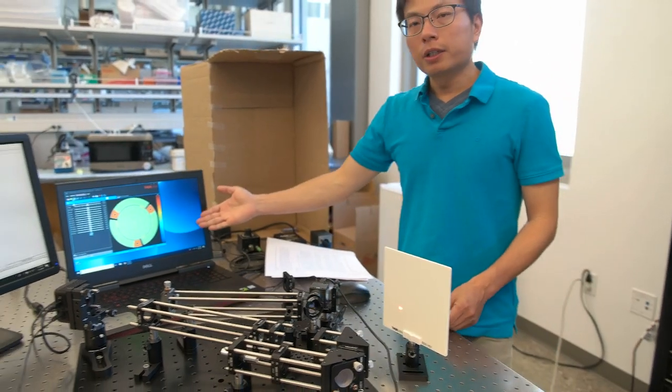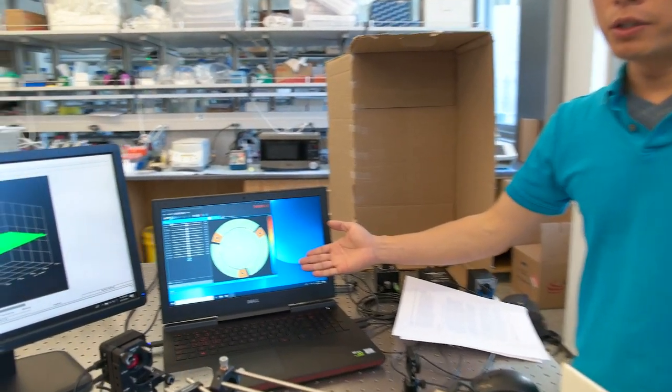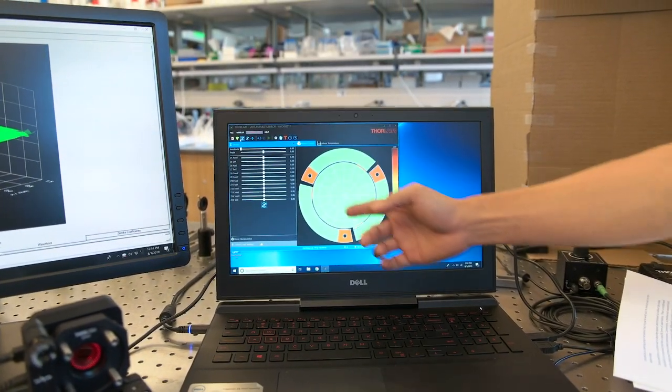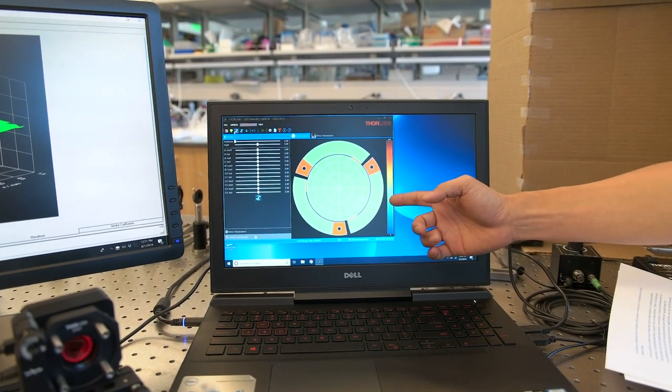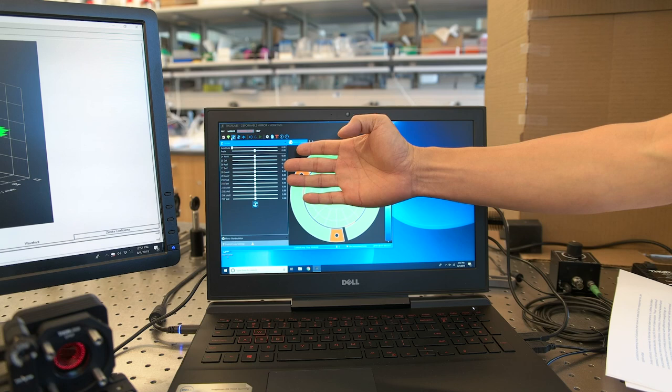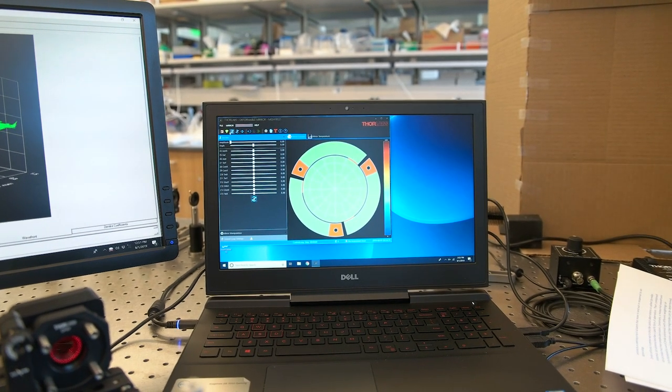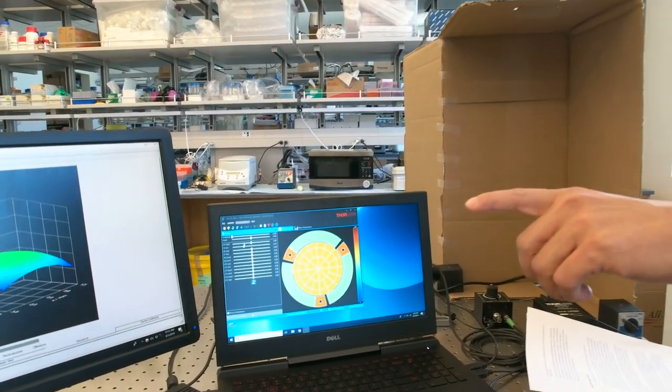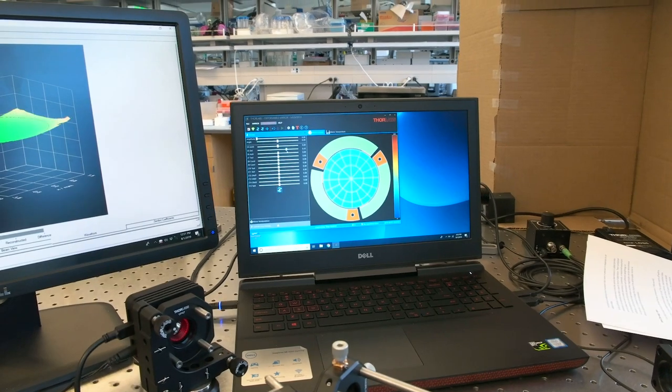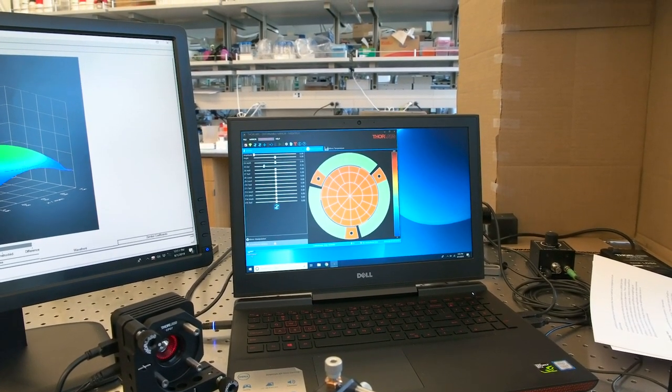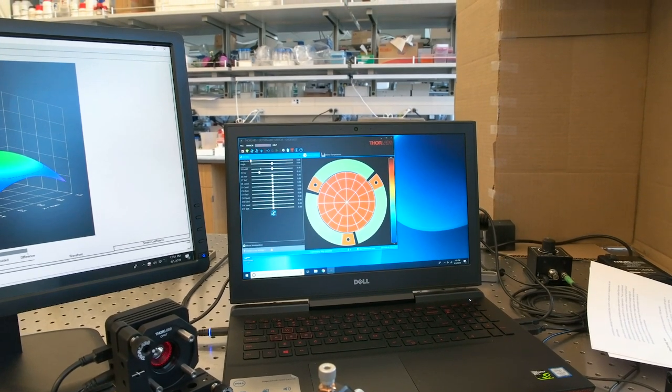This is the interface for changing the shape of the deformable mirror. Here we can see the shape of the deformable mirror. By changing the shape of the deformable mirror, we can see the wavefront also curves either inward or outward from the center.